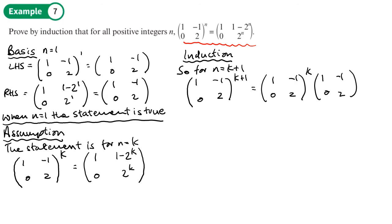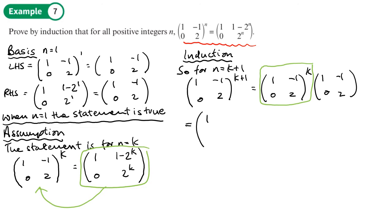This part — the matrix to the power k — we can swap out for what we assumed, because we have that statement written down. So instead of the matrix to the power of k, we substitute our assumption [1, 1 minus 2 to the k; 0, 2 to the k], and then multiply it by the original matrix.